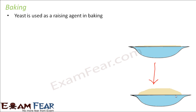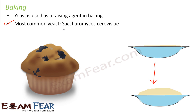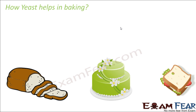Yeast is used as a raising agent in baking and you cannot bake without a raising agent. When you prepare a cake or look at bread, it is very fluffy — not solid inside. Gaps are created in between, making it fluffy. In order to achieve that fluffiness you need a raising agent, which is yeast. That is how you prepare cakes, muffins, and other bakery items. The most common yeast used for baking purposes is Saccharomyces cerevisiae.